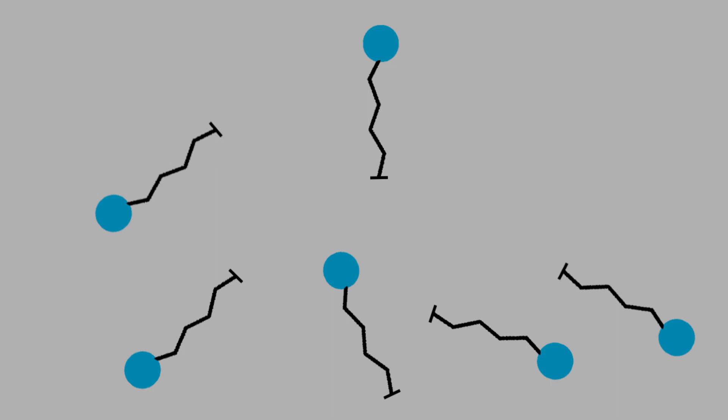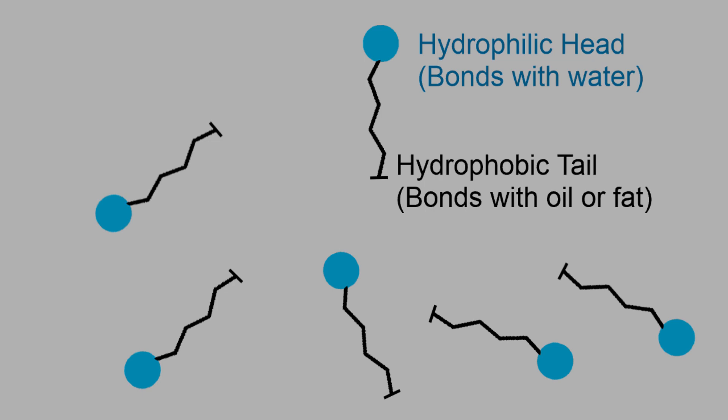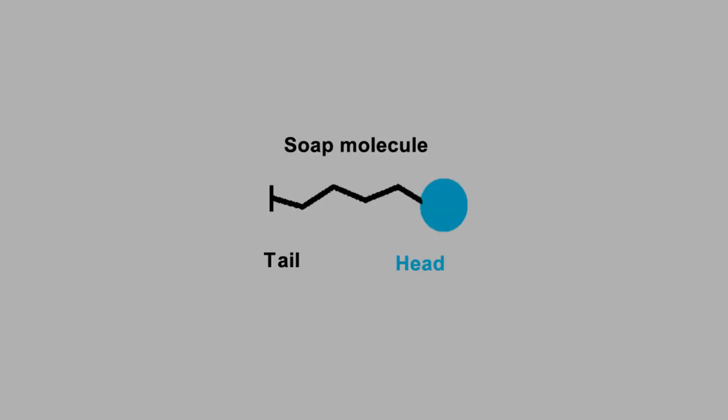Each soap molecule has one head and one tail. The head is hydrophilic and the tail is hydrophobic. This hydrophilic head makes relatively strong bonding with water molecules, and the hydrophobic tail prefers to link up with oils and fats. This soap tail is one kind of trap for coronavirus.